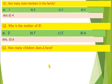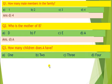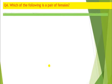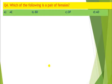Question number 3: How many children does A have? A has 3 children. Question number 4: Which of the following is the pair of females? You have to find the pair where both are female. A, D is the female pair.